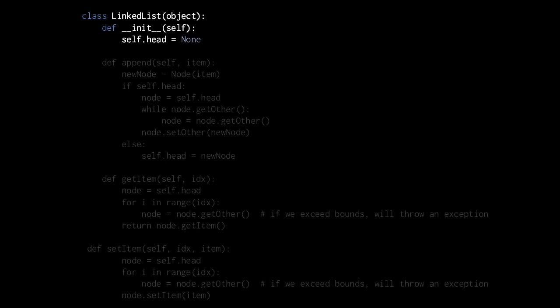First, we'll call this class LinkedList and have it inherit directly from the object type. In the constructor, we do nothing but simply give our linked list object an attribute head, which will be a reference to the head node. We'll keep things simple and say that when you create a new linked list, it always starts empty with no nodes whatsoever — so in the constructor we simply assign self.head to none.